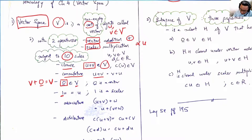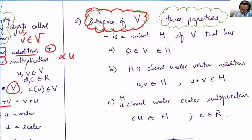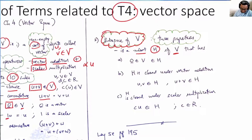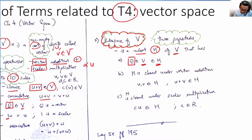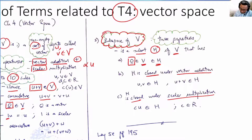Once we understand what a vector space is, we talk about a subspace. A subspace is a subset of a vector space — for example, H is a subset of V. Being a subset of V, it also behaves with all these operations. But we do not need to check all 10 rules; we only need to check three: the zero element of V must belong to the subset, closure under vector addition, and closure under scalar multiplication. Once it satisfies these three rules, H is a valid subspace.